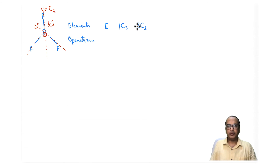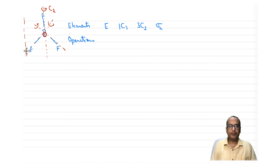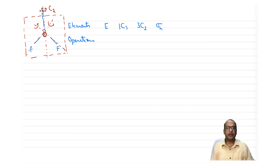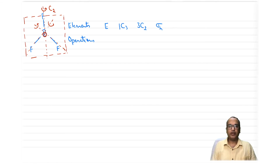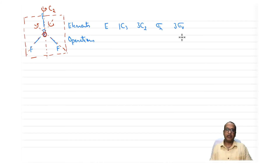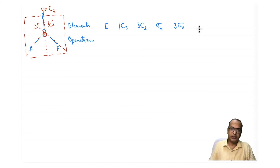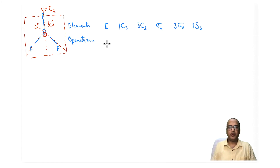We also have sigma-h, the molecular plane containing all four atoms. Then there are three sigma-v planes, each containing a B–F bond and perpendicular to the molecular plane, because each contains the C2 axis as well as the C3 axis. Since a C3 axis and a perpendicular plane are both present, there must also be an S3 axis — and since there is only one C3, there is only one S3.